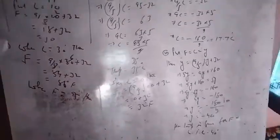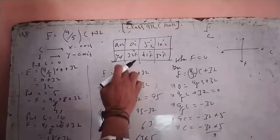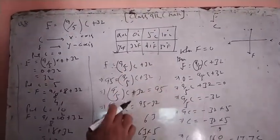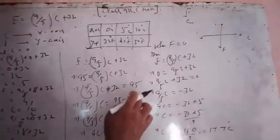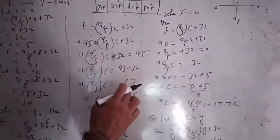Third part: when temperature is 95 degree Fahrenheit, we have to convert to Celsius. F is equal to 9/5C plus 32. So 95 equals 9/5C plus 32. Therefore 9/5C is equal to 63.